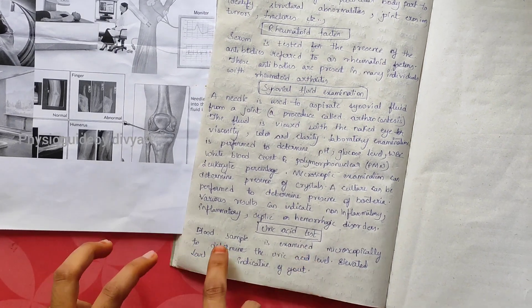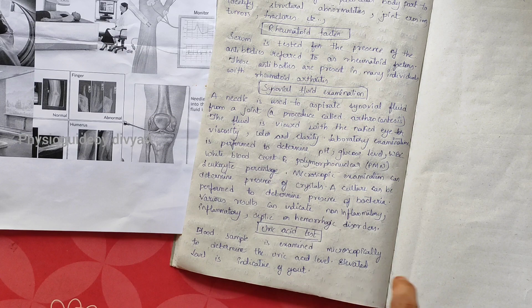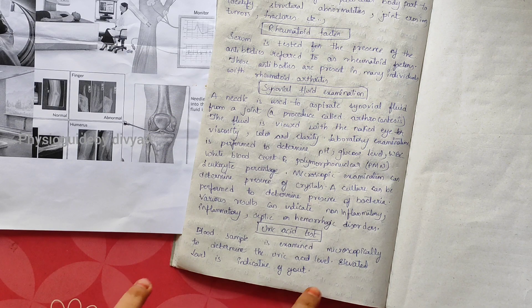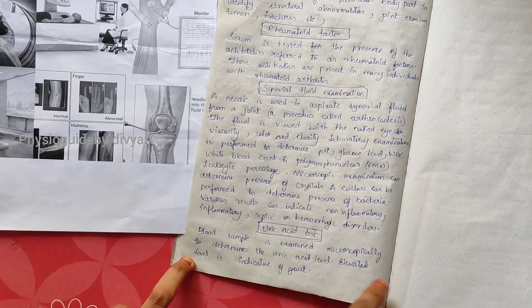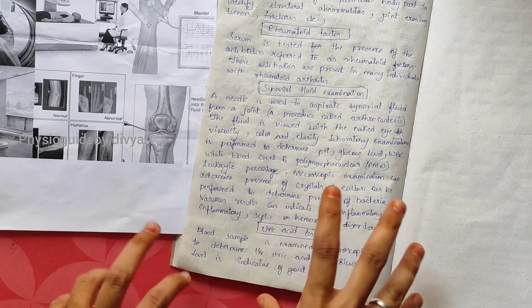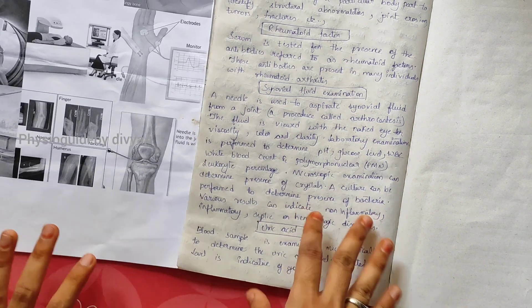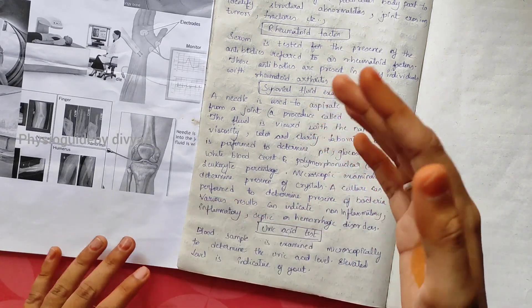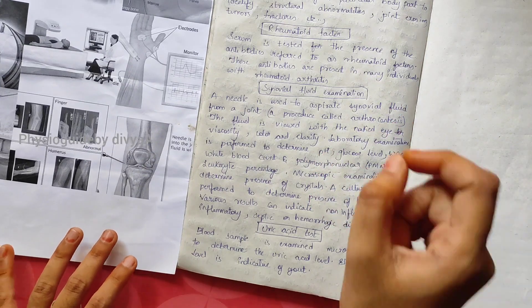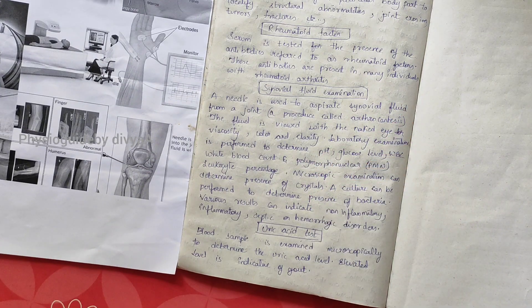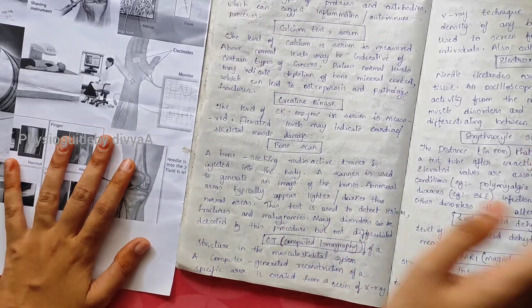Uric acid test: the blood sample is examined microscopically to determine uric acid level. Elevated level is indicative of gout. If there is elevation of uric acid, we can identify gout is present. I hope you understood this topic. Thank you for watching this video.